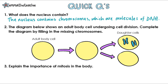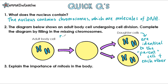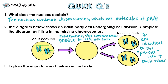Number two: the diagram below shows an adult body cell undergoing cell division. Complete the diagram by filling in the missing chromosomes. At the end we've got a daughter cell, and the daughter cells are identical to the parent cell as well as each other. So if this daughter cell has four chromosomes, so should the other one and so should the adult body cell. Remember that during cell division the chromosome number doubles, so if the adult body cell had four chromosomes, the cell undergoing replication needs to have double the amount, which is eight. The daughter cells always have the same number of chromosomes as the adult body cell.